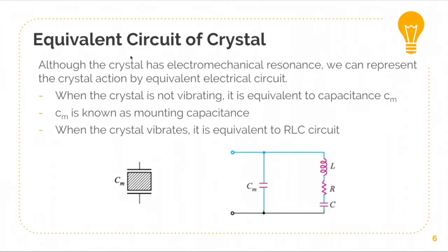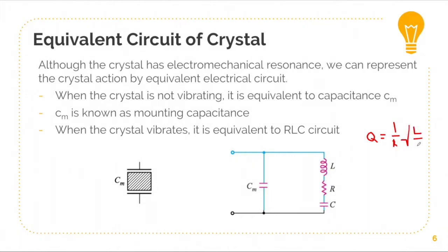One way to measure the quality of the crystal oscillator is through the Q factor, which stands for quality factor. It is equivalent to one over R multiplied by the square root of L over C. The Q factor determines the crystal's frequency stability. In general, the Q factor of a crystal has a range from 20,000 to more than 100,000.